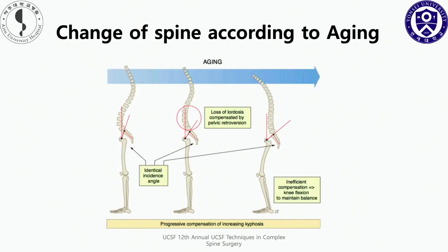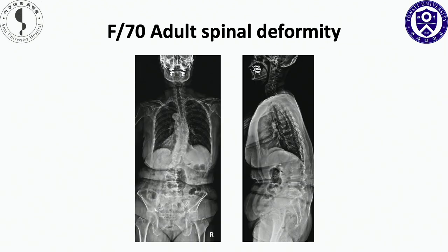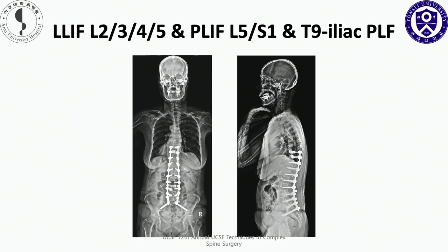As you know, lumbar lordosis compensated by pelvic retroversion. But when compensation is insufficient, knee flexion occurs to maintain balance. When the balance is broken and adult spinal deformity occurs — this is a 70-year-old female with coronal-sagittal imbalance. I performed adult spinal deformity surgery with lateral interbody fusion L3-4-5, PLIF L5-S1, and T9 to pelvis posterior fusion.